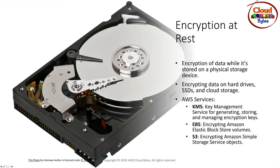In AWS, we have services like KMS — Key Management Service — which handles generation and management of cryptographic keys in a Hardware Security Module (HSM). These keys are used for encryption and decryption. KMS also allows you to rotate keys and apply fine-grained key policies so that only authorized users get access. For EBS block storage used by EC2, you can apply encryption using KMS-managed keys to encrypt EBS volumes.